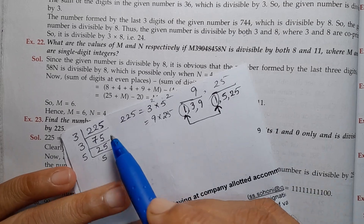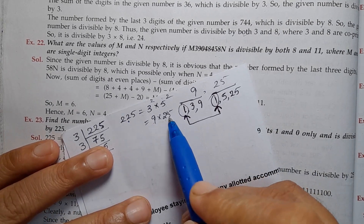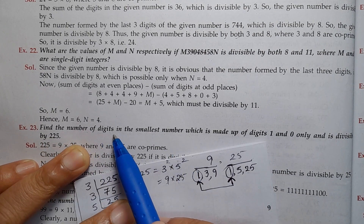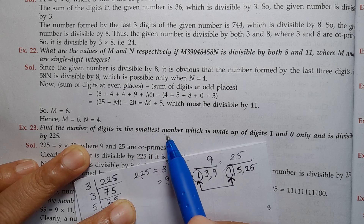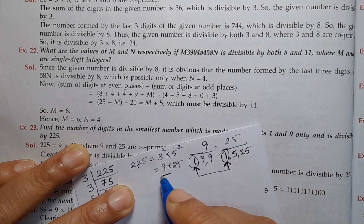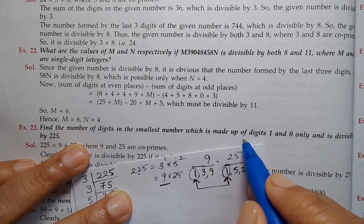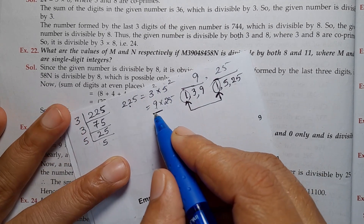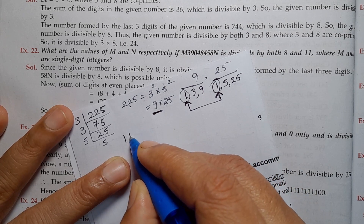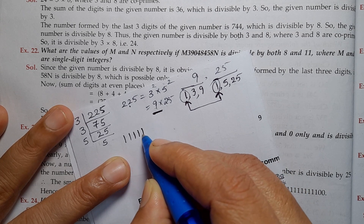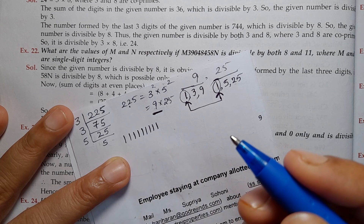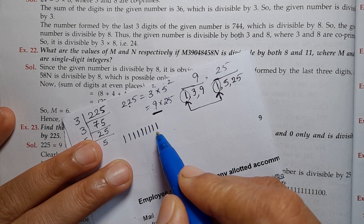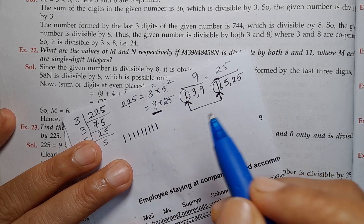So if we divide 225, both 9 and 25 must divide it. The question asks for the smallest number made up of digits 1 and 0 only, divisible by 225. For divisibility by 9, the digit sum must be divisible by 9. So we need nine 1s: 1+1+1+... nine times = 9, which is divisible by 9.